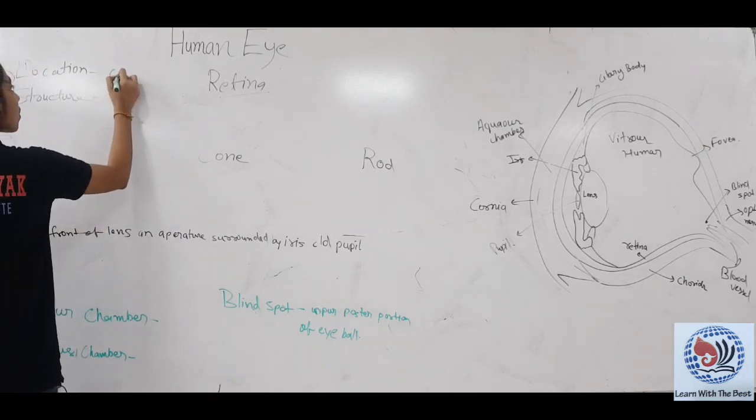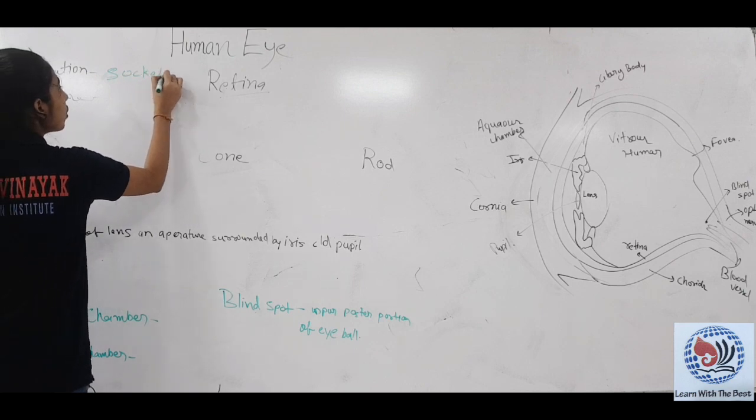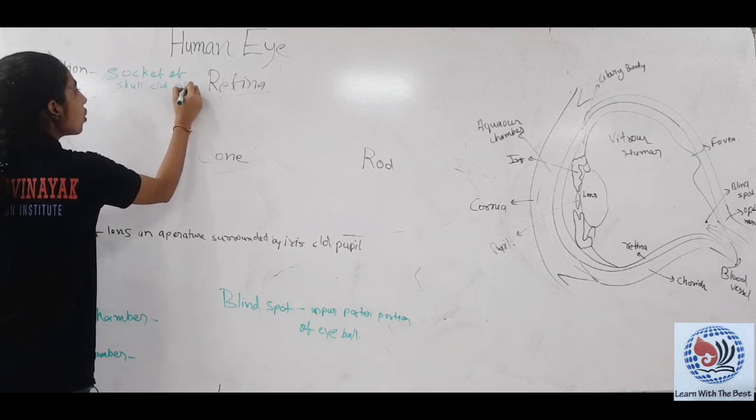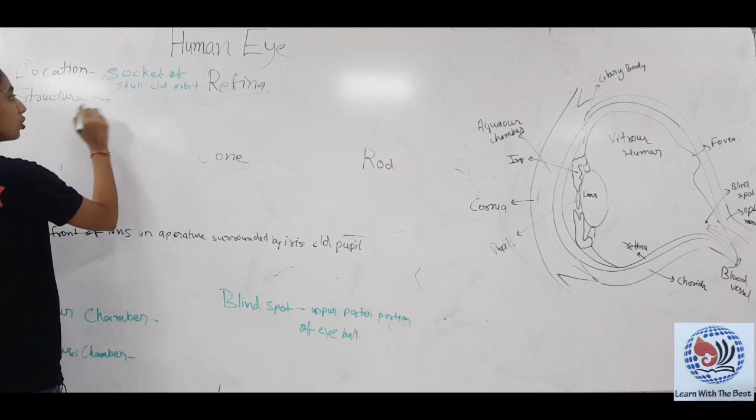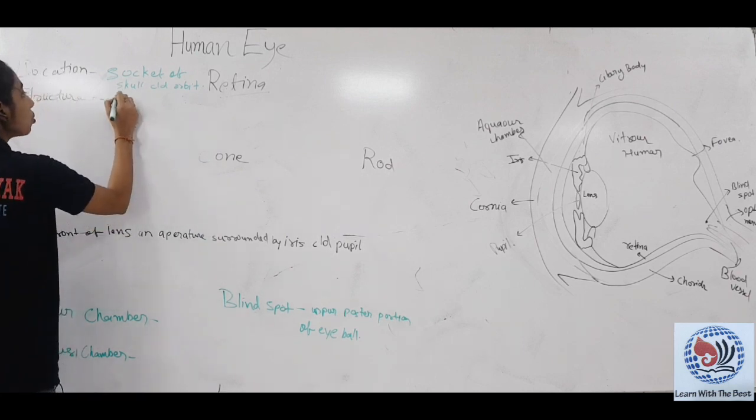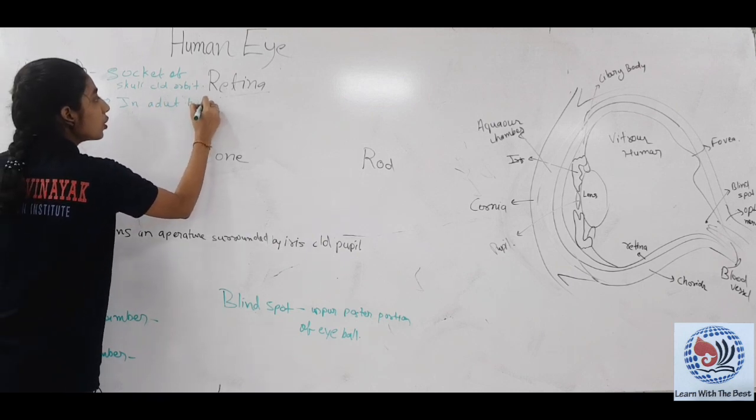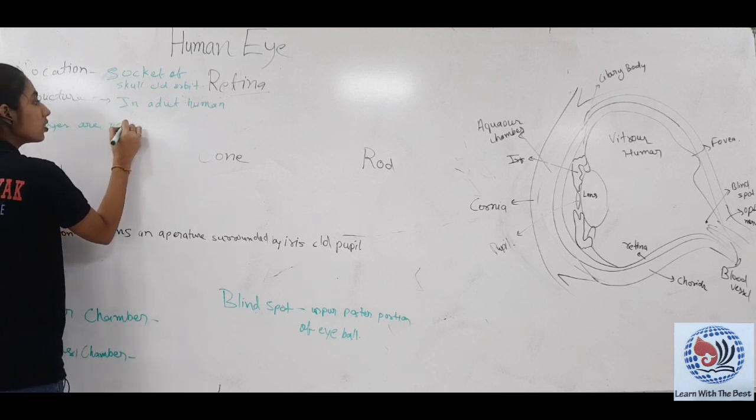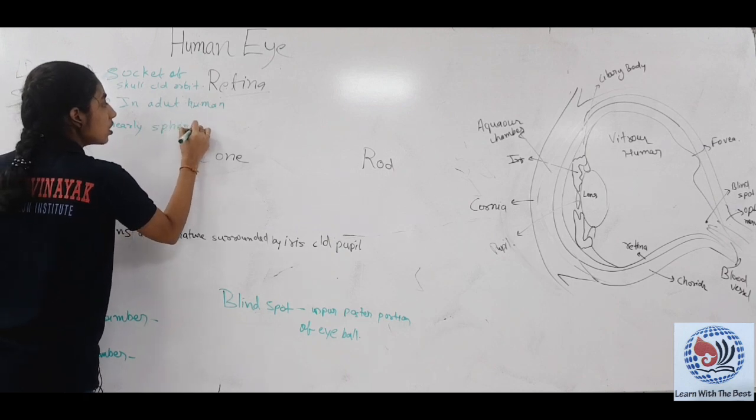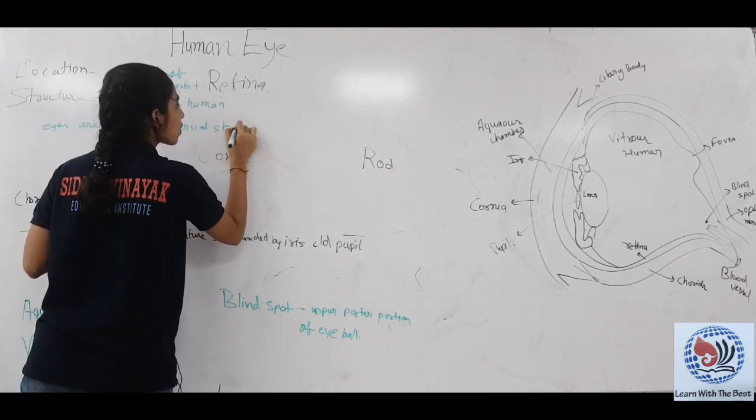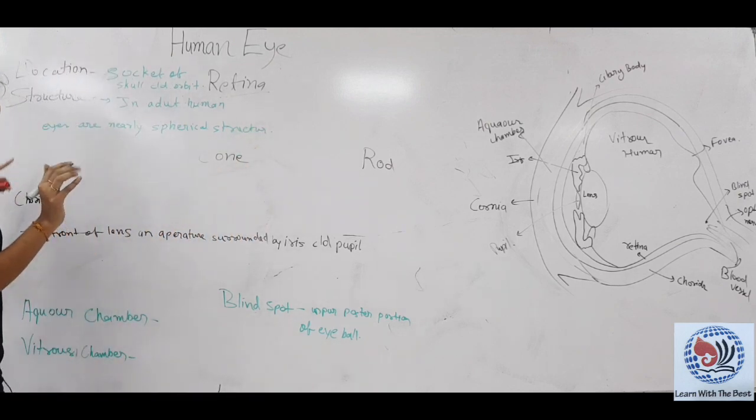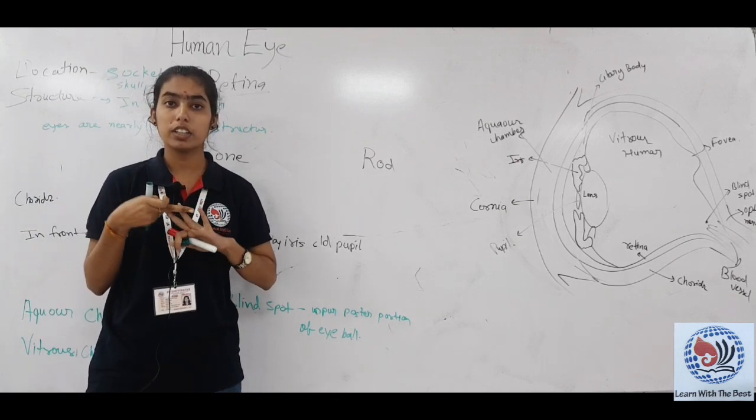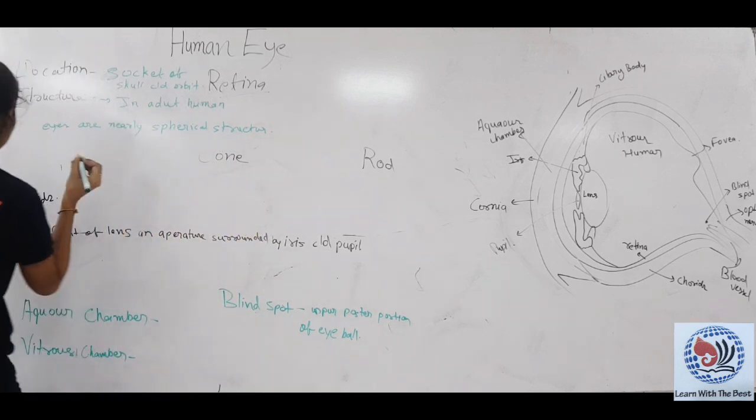Regarding structure, in adult humans, eyes are nearly spherical structures. Eyes are placed on three layers: sclera, cornea, and choroid.